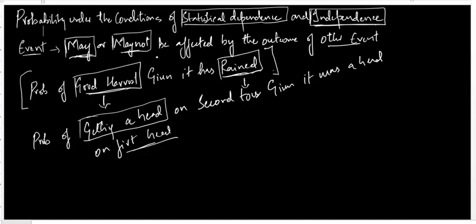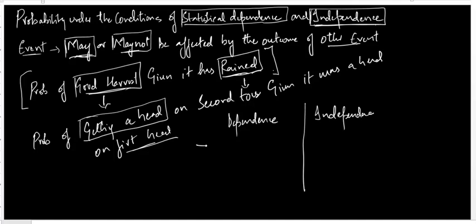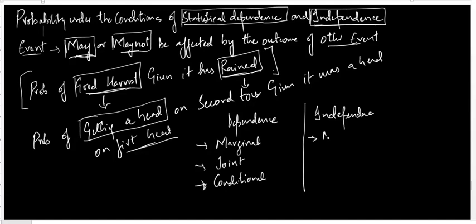We will be taking up two cases: statistical dependence and statistical independence. Under each case we will study three types of probability — marginal probability, joint probability, and conditional probability.